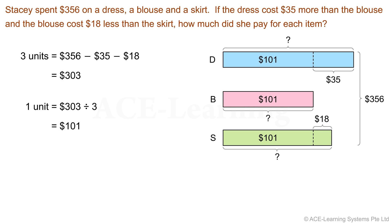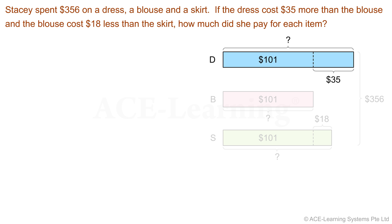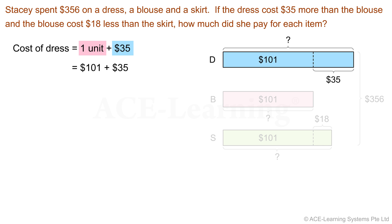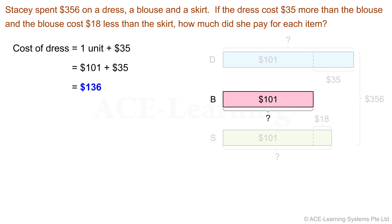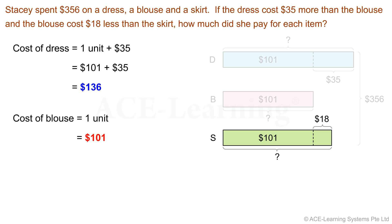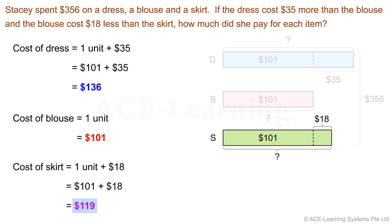Now we are ready to find the cost of each item. The cost of the dress is one unit plus $35, which equals $101 plus $35, giving us $136. The cost of the blouse is just one unit, which equals $101. The cost of the skirt is one unit plus $18, which equals $101 plus $18, giving us $119.